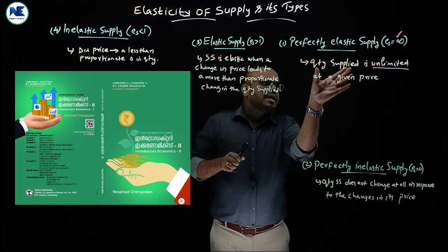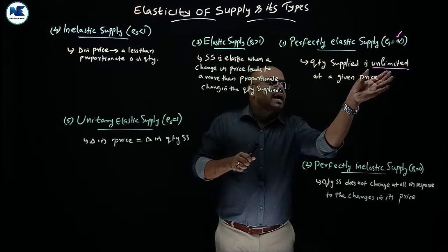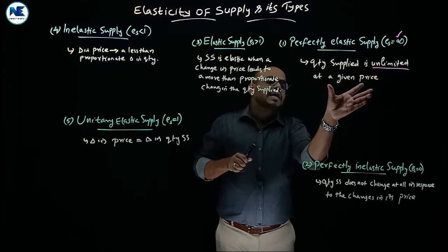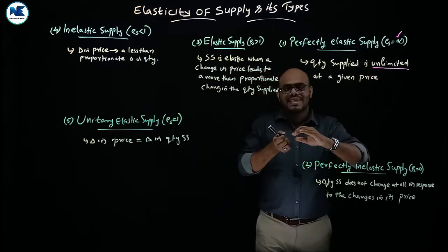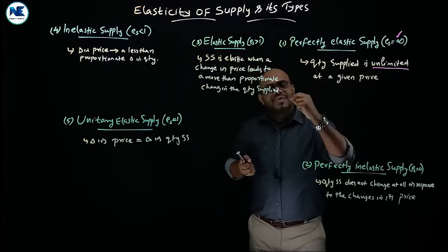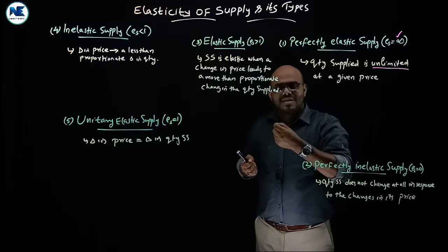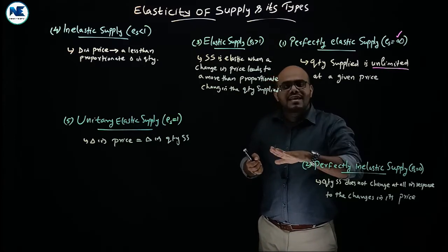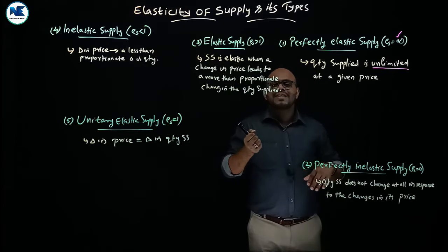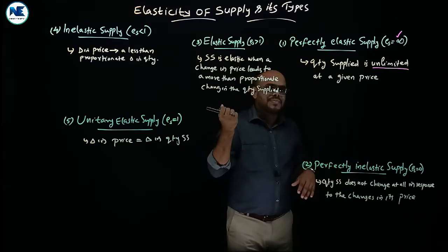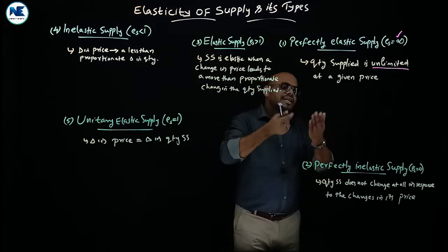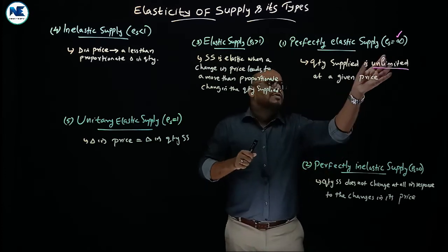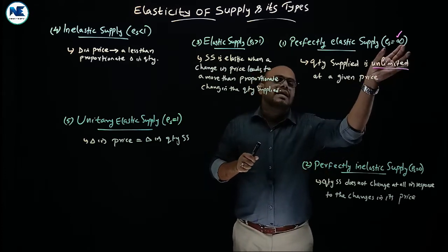Here the quantity supplied is unlimited — that is, infinity — at a given price. A slight change in price means that the quantity supplied becomes zero. This is perfectly elastic supply, and its value is infinity.